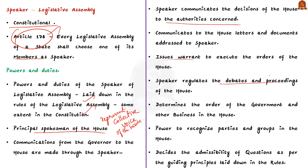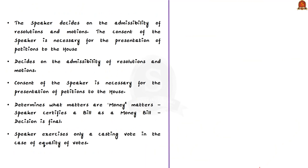A special power given to the Speaker is deciding the admissibility of questions as per the guiding principles laid down in the rules — admitting a question for discussion is the Speaker's discretion. The Speaker also decides on the admissibility of resolutions and motions, and the Speaker's consent is necessary for the presentation of a petition to the house. The Speaker determines which subjects are money matters, as these fall within the exclusive jurisdiction of the legislative assembly. If the Speaker certifies a bill as a money bill, his decision is final. Under the Constitution, the Speaker exercises only a casting vote in the case of equality of votes.